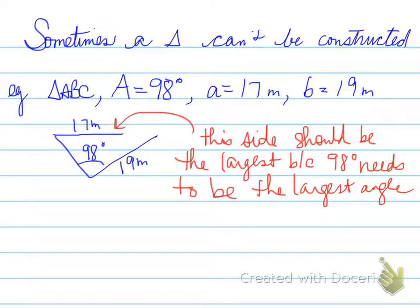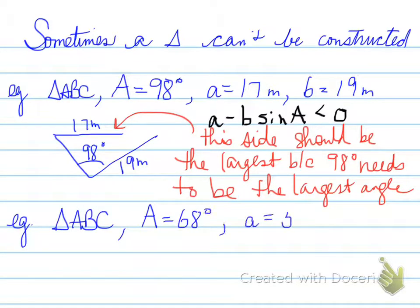Look at the other side that's given. It's even larger than the 98 degrees. In a triangle, that is impossible. We do the A minus B sine A test, and you find out that A minus B sine A is less than 0, so therefore using even the law to tell you that it doesn't exist.